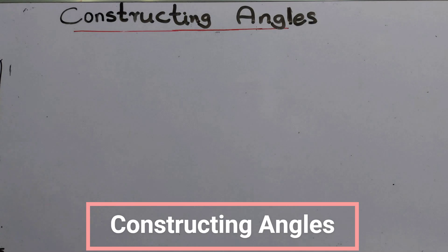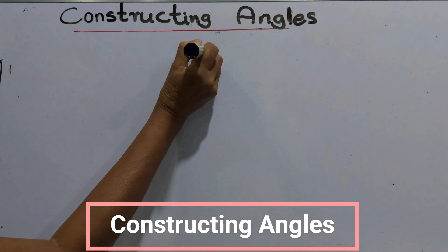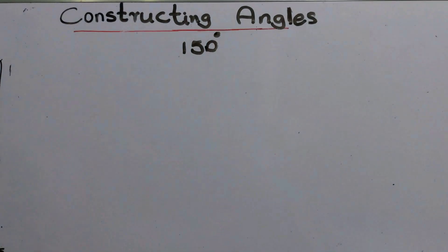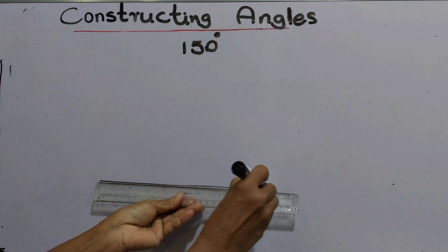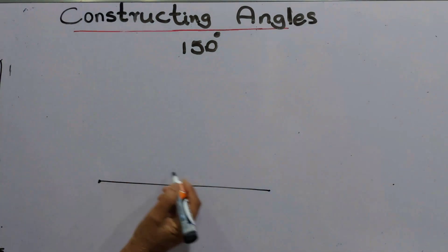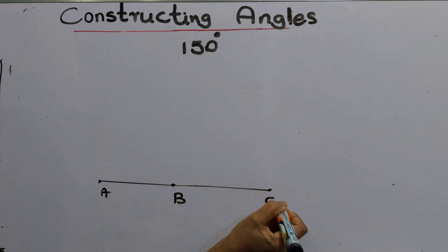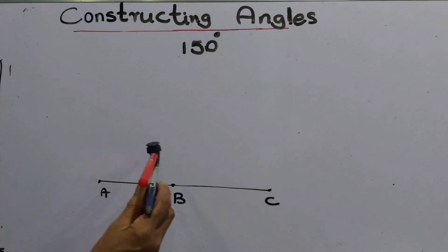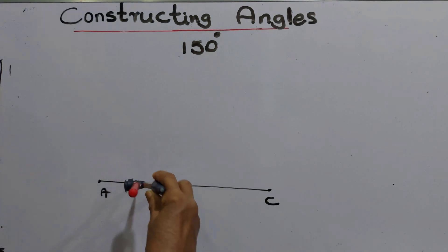Today we are going to construct an angle of 150 degrees. The first step is to draw a line segment and name it AB. The second step is to take the compass, keep the compass point on B, and draw a full arc.